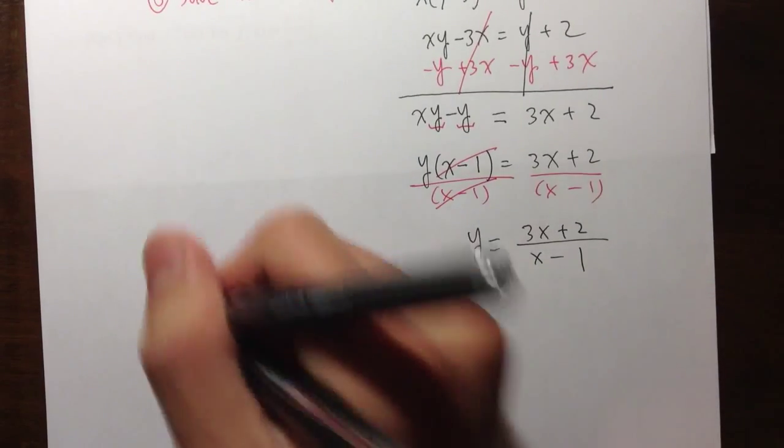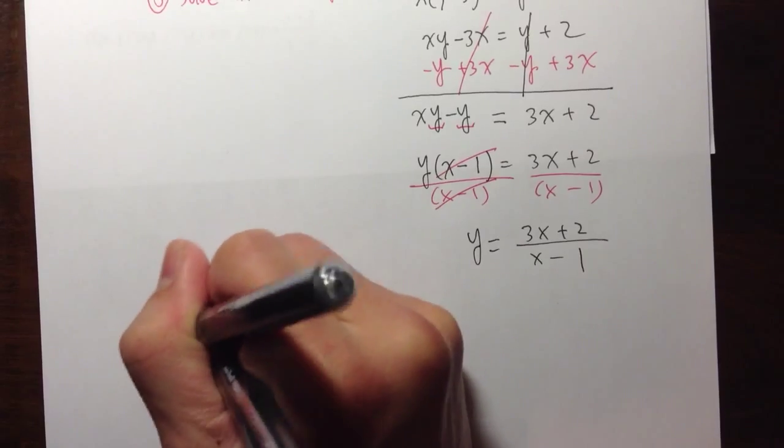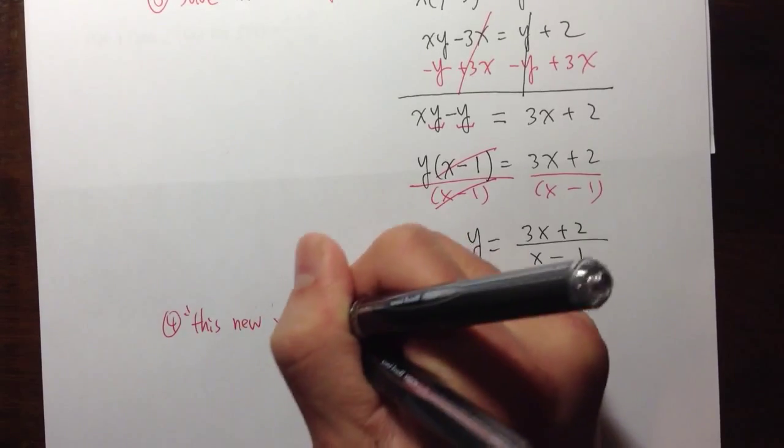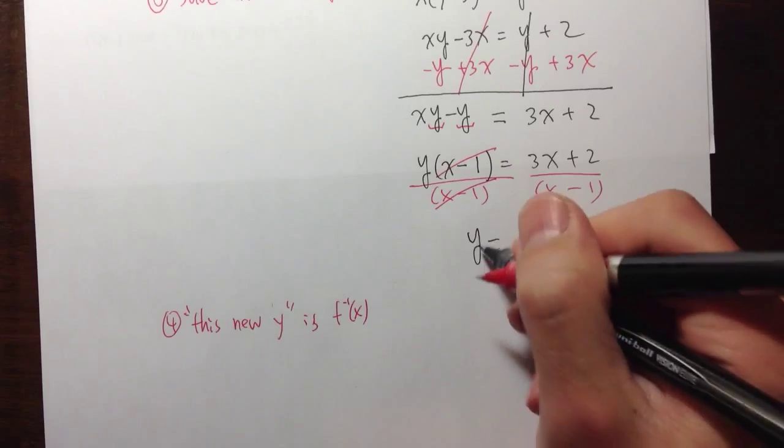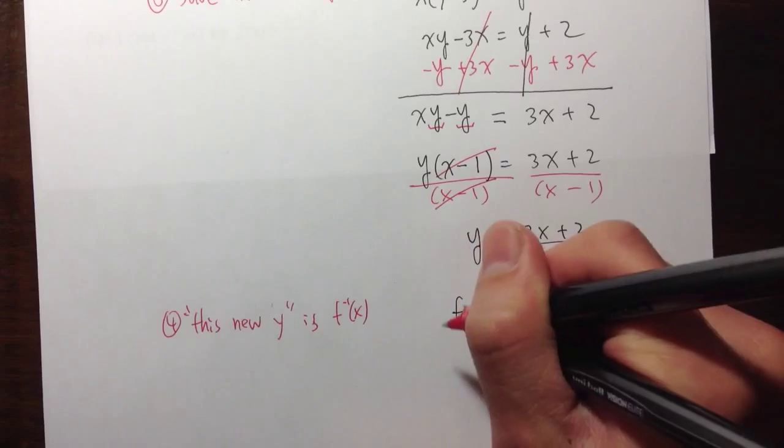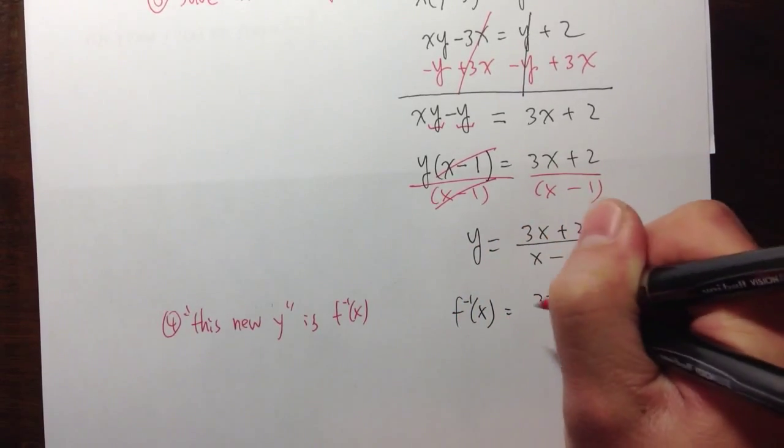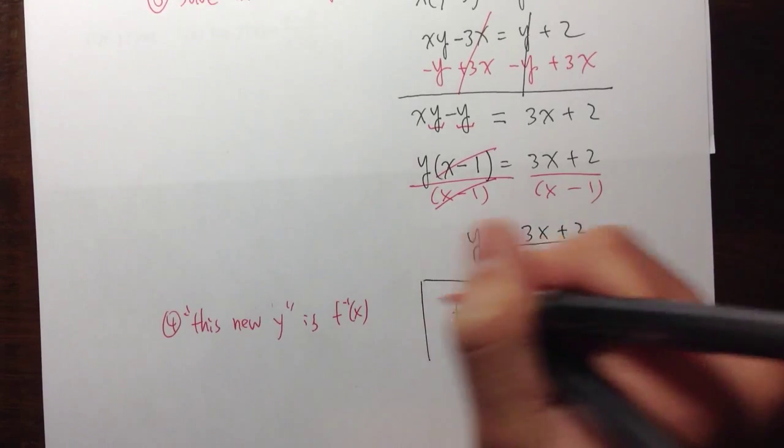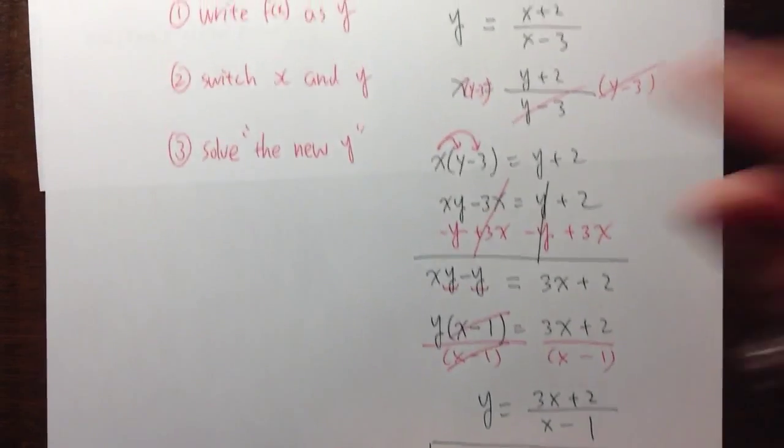The fourth step, that's how you're going to write your happy answers. I also say, this new y is the inverse. So, we're just going to write this new y as f inverse of x. That's equal to 3x plus 2 over x minus 1. And that's it. So, these are the four steps.